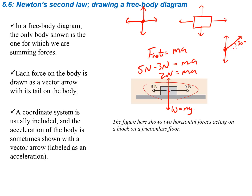Each force on the body is drawn as a vector arrow with its tail on the body and the arrow going away. A coordinate system is usually included, and the acceleration of the body is sometimes shown with a vector arrow labeled as acceleration. For instance, if this object was accelerating, beside the free body diagram I would draw another arrow showing the acceleration in some direction — it's just helpful to draw.